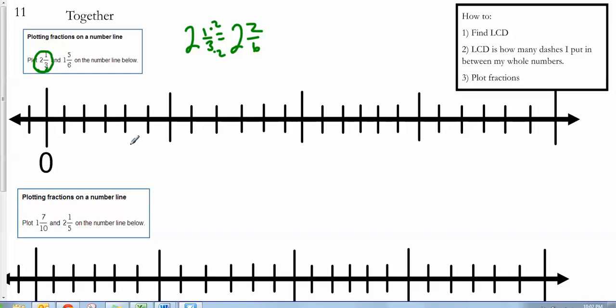Quick adjustment there. So this is one, this is two, this is three. So two and two-sixths, that's in between the two and the three. There's one-sixth, there's two-sixths right there. And then one and five-sixths. There's one, it's in between one and two. So I count over one, two, three, four, and five. And there's one and five-sixths.